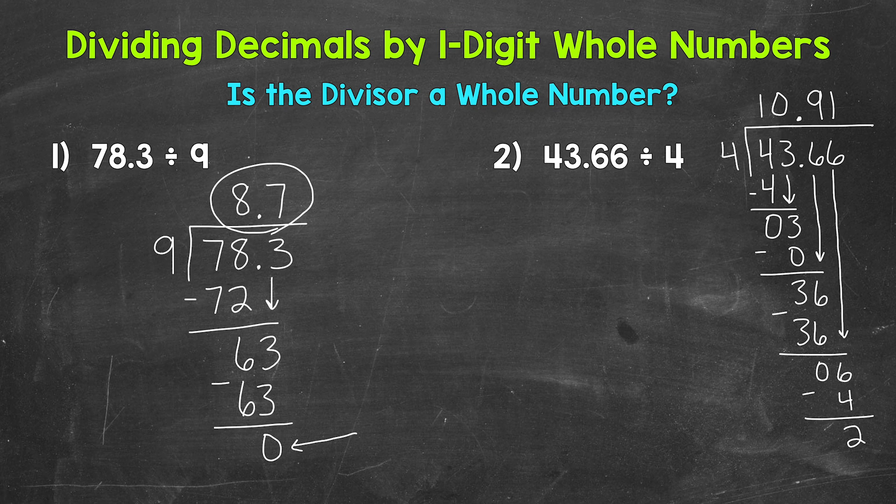What we can do is extend this problem until we do get a clean cut 0. And that's when we will have our final answer. We can do this by using placeholder 0s that we can bring down. Let's use a placeholder 0 in the thousandths place that we can bring down. Remember, 0s to the right of a decimal do not change the value of that decimal. So we are not changing the value of the problem at all. Let's bring this 0 down.